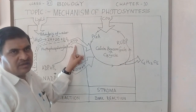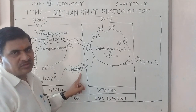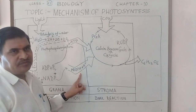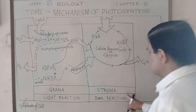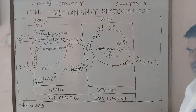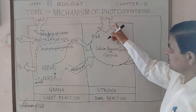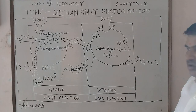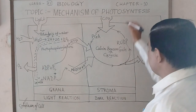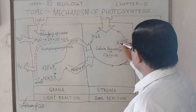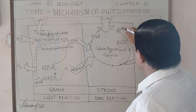ATP and NADPH+H+ are both utilized in the dark reaction, which occurs in the stroma, where reduction of carbon dioxide — taken from the atmosphere — takes place. When carbon dioxide enters, different enzymes are involved; the key enzyme is Rubisco (R-U-B-I-S-C-O).